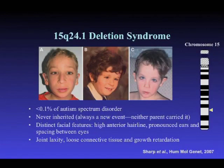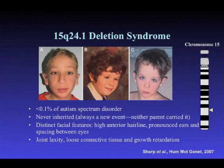We identified six new regions total by screening about 1,000–2,000 children. Another region on chromosome 15 involves a larger deletion of about three megabases, with duplications at the edge and very characteristic features. Almost all these kids have been described as having autistic-like features — problems with social interaction and repetitive behavior — but they also have clearly visible features such as frontal bossing, high anterior hairline, pronounced ears, and wide spacing between the eyes. This is a very rare deletion, probably 0.05% of all cases, with additional features including joint laxity, loose connective tissue, and growth retardation.